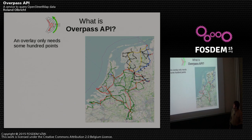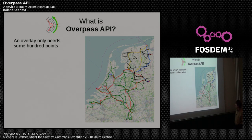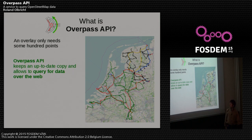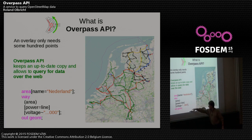That's where the Overpass API comes in. An overlay only needs some 100 points, like the thing you see here. I've just made a map of all the power distribution lines in the Netherlands, and you only need a few hundred nodes to produce a proper map. You don't want to deal with all the 2.5 billion nodes. So the Overpass API supplies you with a query language such that you can query the entire database and get in real time the result, including the latest edits. These six lines suffice to get all the power line network of the Netherlands.